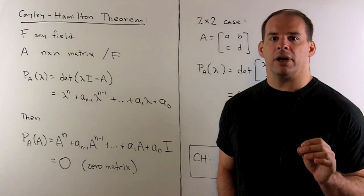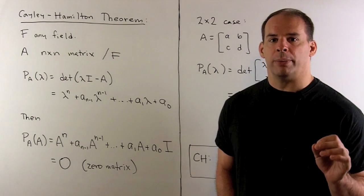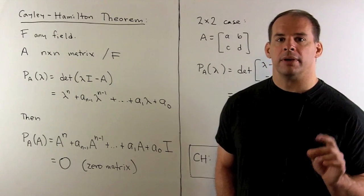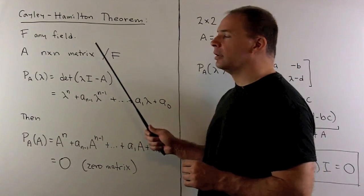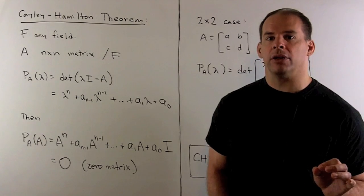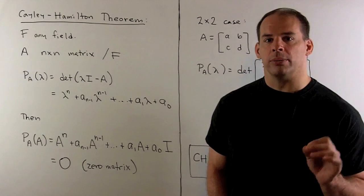To get a feel for the Cayley-Hamilton Theorem, we first run through the 2x2 case. So our theorem states, F is any field. Since we're doing linear algebra, we'll insist on a field, but in general this will be true of a commutative ring.